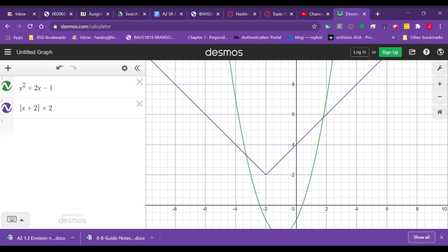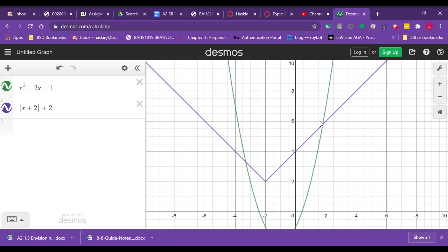And then if I move my graph up, I can see it intersects up here as well. And again, if I just click on that, it tells me that is approximately 1.8.